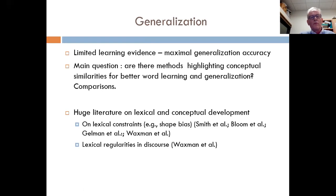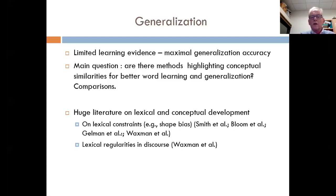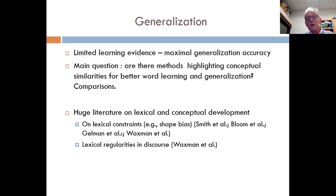Before I come to this situation, I should pay my respects to the huge literature on lexical and conceptual development. There are plenty of studies on what people call lexical constraints — the idea that the world is so messy that children have to be biased towards some particular kind of meaning. There is a famous shape bias, which has received much attention, first described by Linda Smith and colleagues, and later described by other people in very different contexts and with very different theoretical backgrounds.